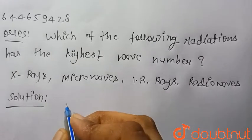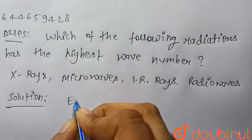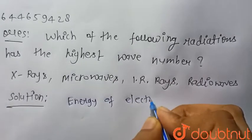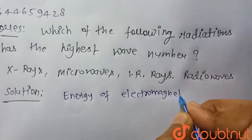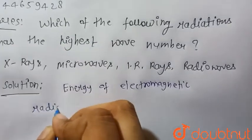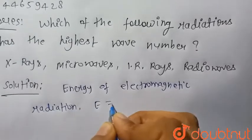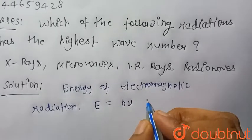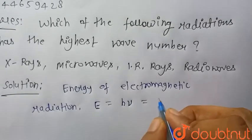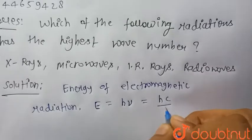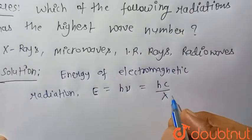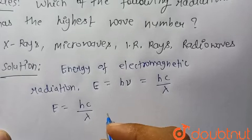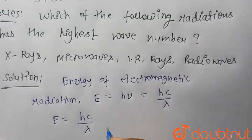We know that the energy of electromagnetic radiation E is equal to hν, where ν is the frequency. We also know that ν equals c divided by λ, so energy equals hc divided by λ. We have to find the radiation which has the highest wave number.